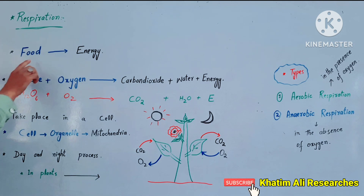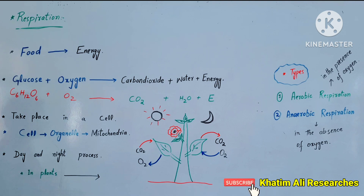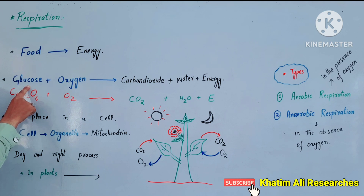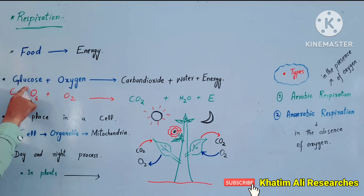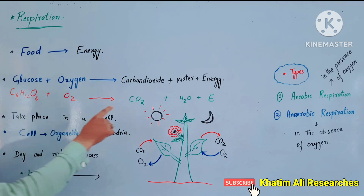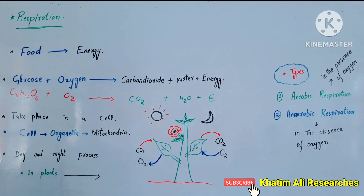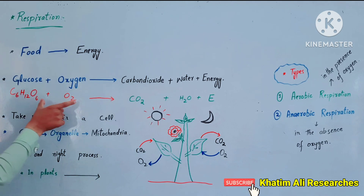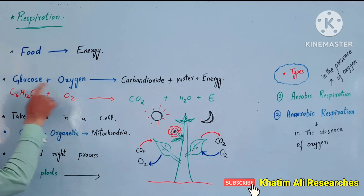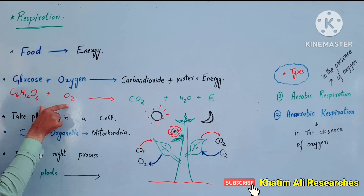For plants and animals, the reactant is glucose. Oxygen goes in from the environment. The reactants are glucose and oxygen, and that is the reaction.